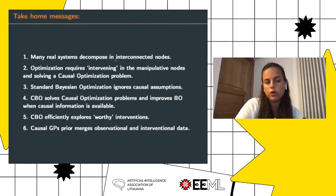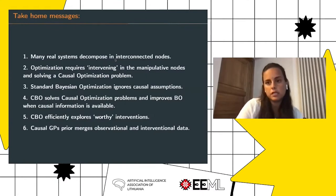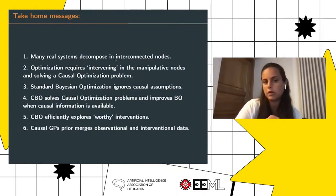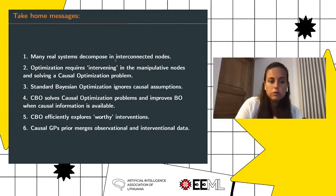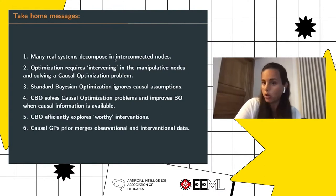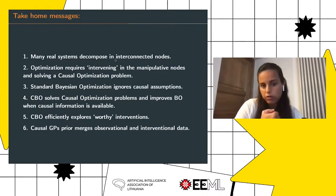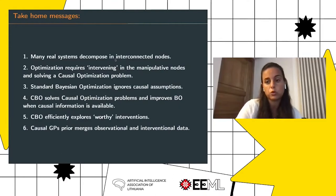So the take-home messages are: many real systems decompose into interconnected nodes, and causal optimization requires intervening in the system and selecting the manipulative nodes, thereby solving a causal optimization problem. CBO — causal Bayesian optimization — solves this using Gaussian processes and improves upon standard Bayesian optimization when causal information is available, by exploring worthwhile interventions and using the causal GP prior construction that integrates different sources of data.